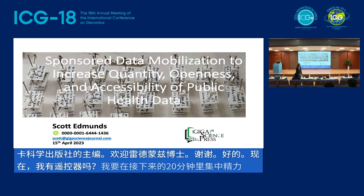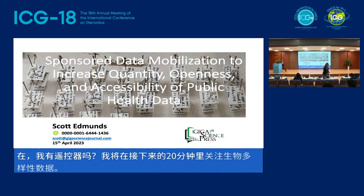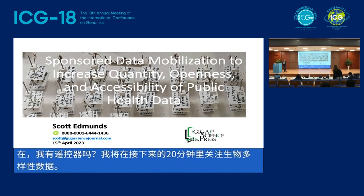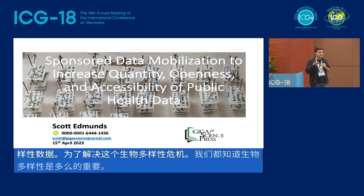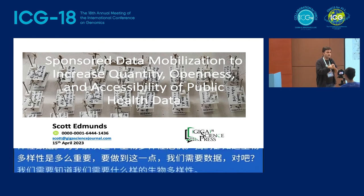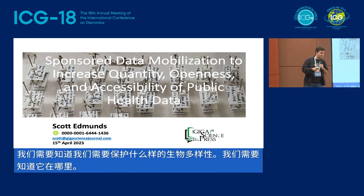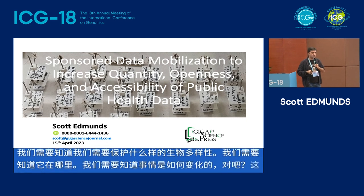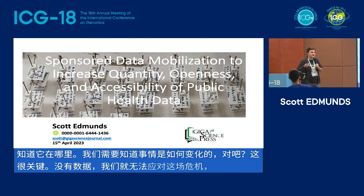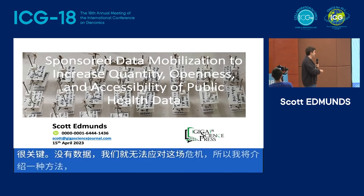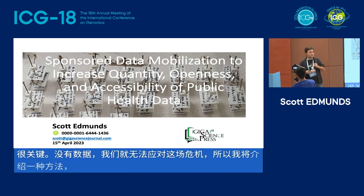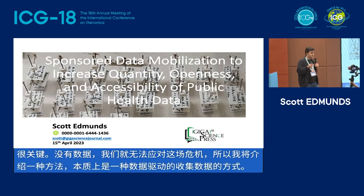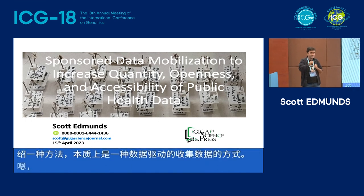To tackle this biodiversity crisis — we all know how important biodiversity is — we need data. We need to know what biodiversity we need to protect, where it is, and how things are changing. It's crucial. We can't tackle this crisis without data. I'm going to cover a data-driven approach to collecting data and talk about a particular type of biodiversity data that has immediate impact on human health.